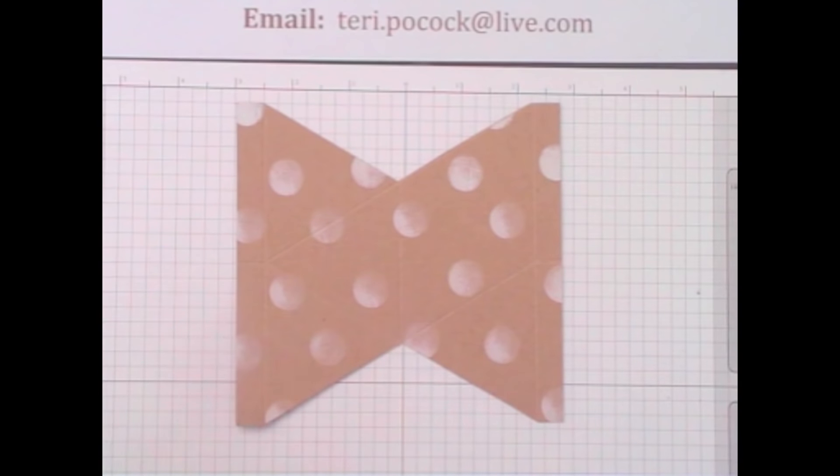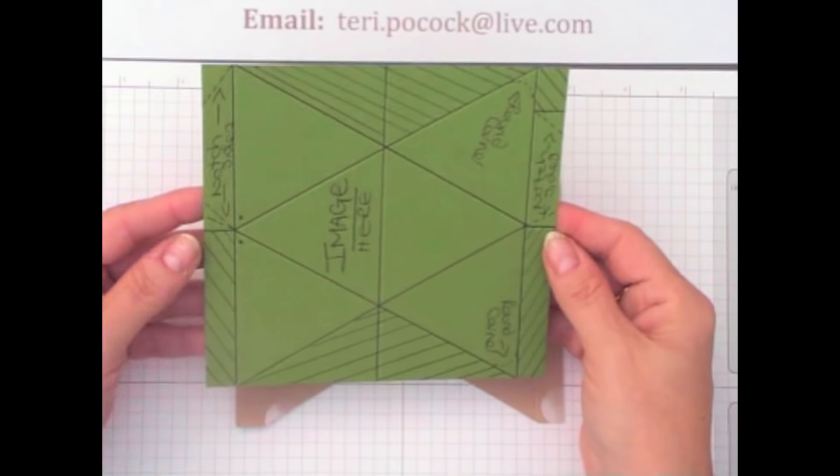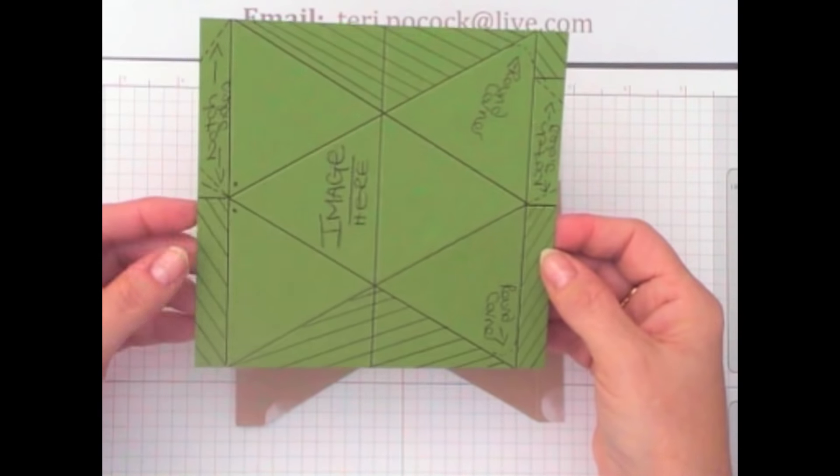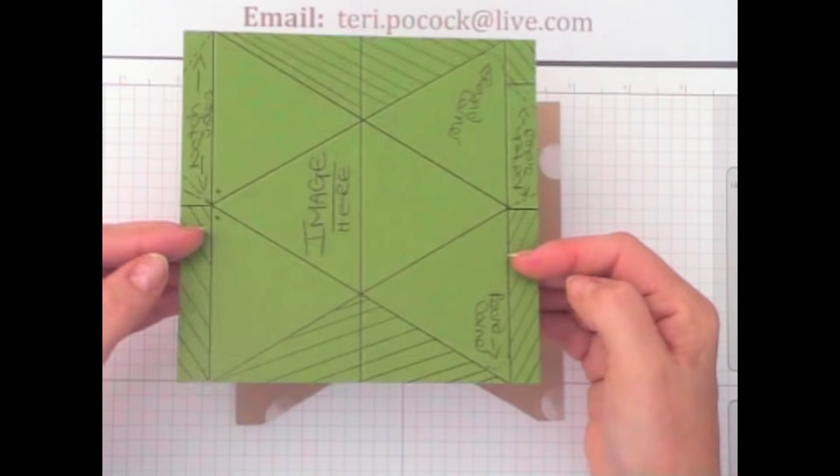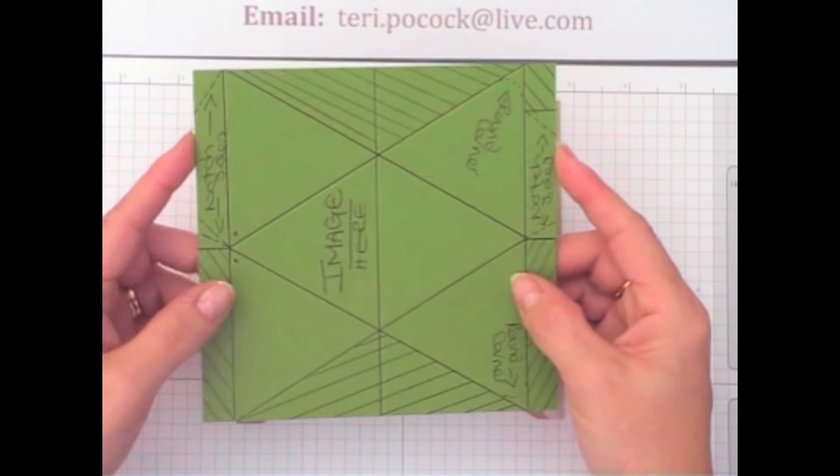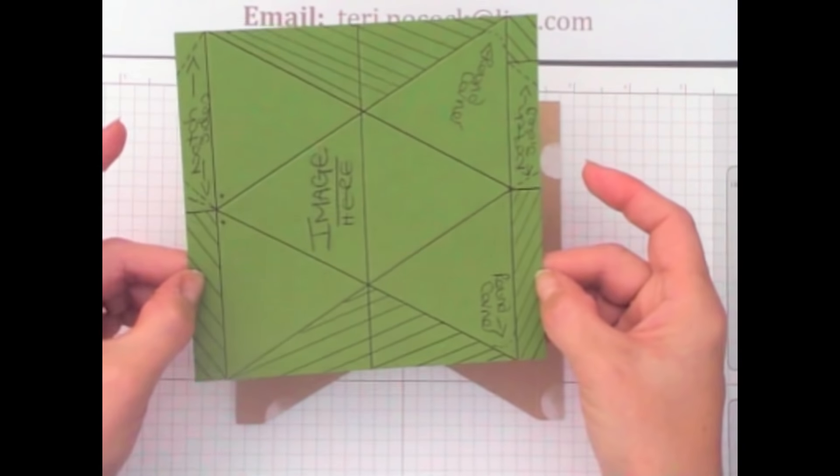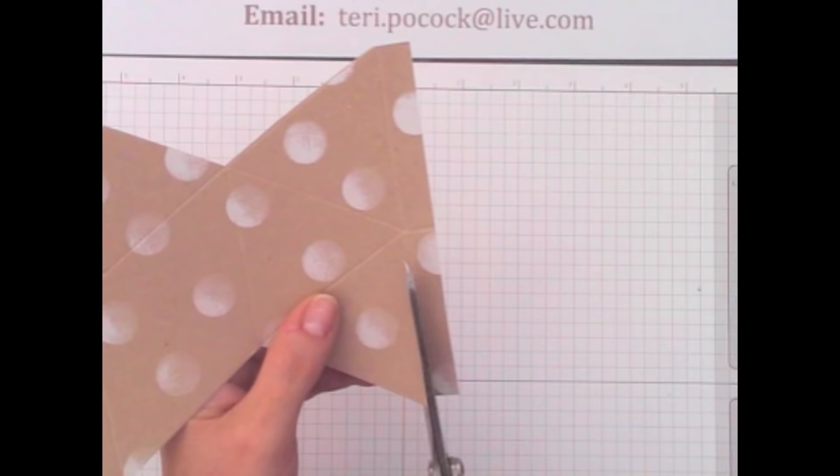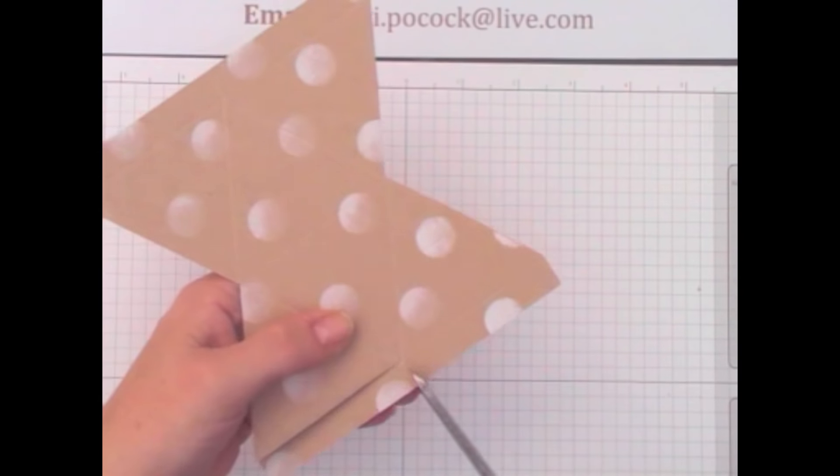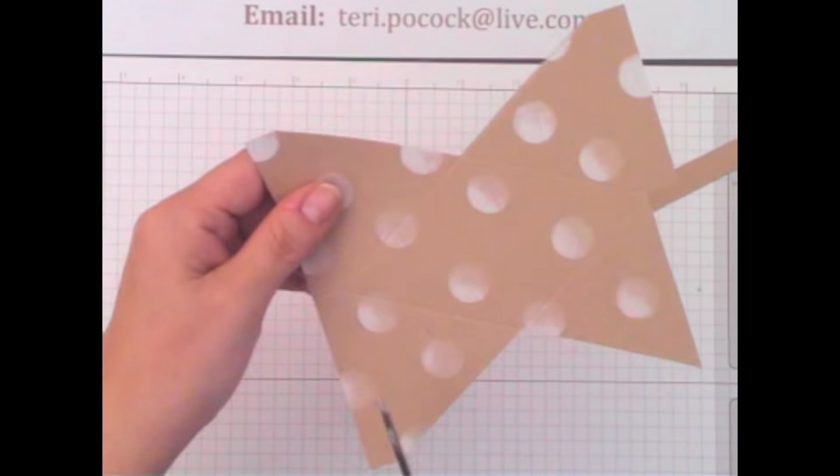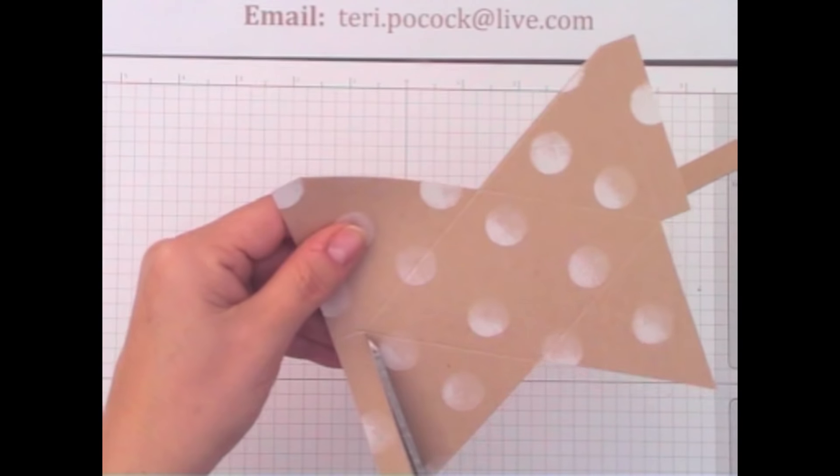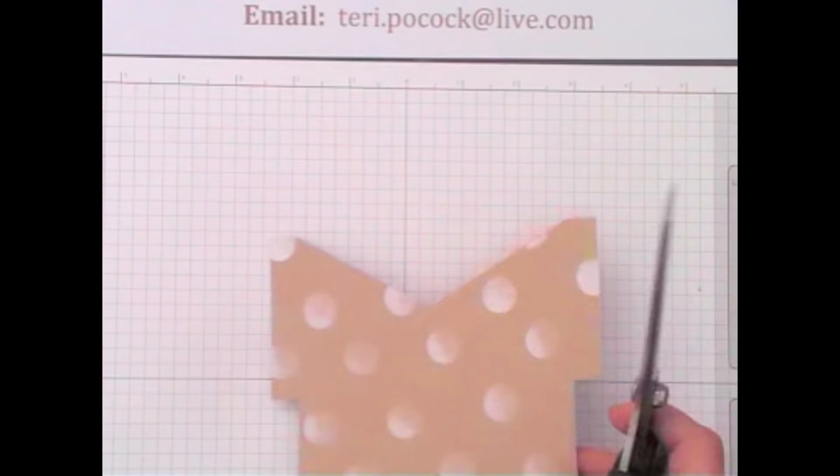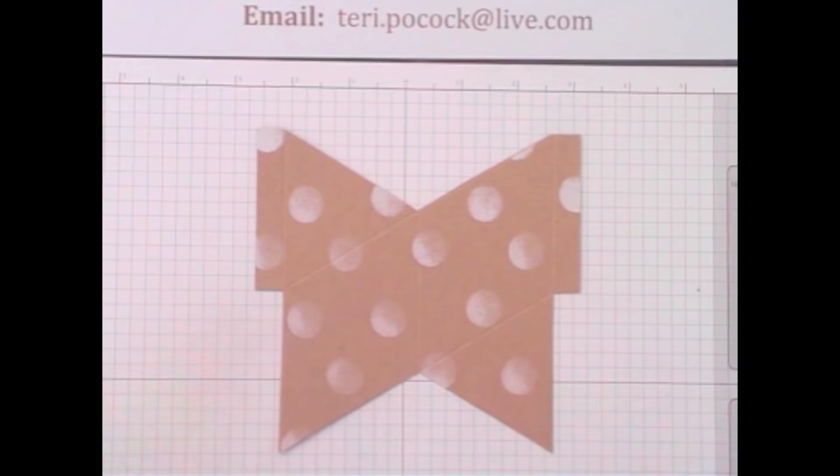Now the next thing to do, on the side we've got two sections on each side. Now we want to remove either the two bottom tabs or the two top tabs. It doesn't matter which you do, just take two of them away. So I'm going to take away the bottom ones. So again, just cut along the score lines. Now your cardstock should look like that.